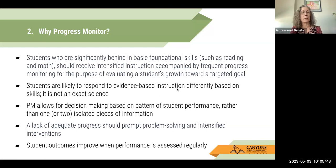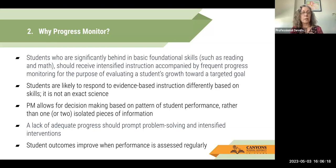We also don't know that a specific intervention will work with a specific student, so some of it's trial and error. That's why we need to be monitoring progress over time so that we can make adjustments. Progress monitoring allows us to make decisions based on a pattern of performance rather than isolated pieces of information such as benchmark performance, which only occurs three times a year. A lack of adequate progress should prompt problem solving and intensification of interventions. We can improve student outcomes when performance is assessed regularly — if we're only monitoring every once in a while, we'll miss the opportunity to make adjustments.